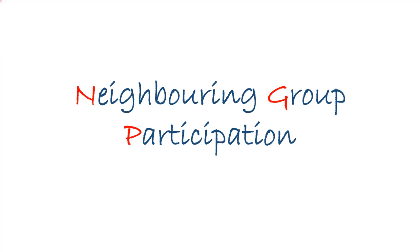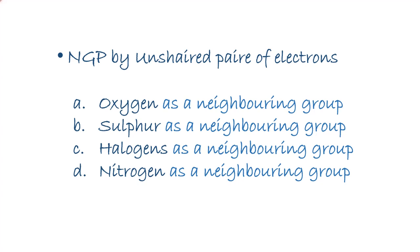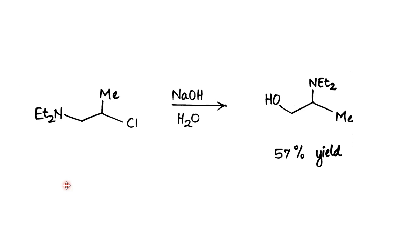Hello friends. In this lecture we are going to discuss about neighboring group participation, and this is our third lecture of NGP. In the last two lectures we have already discussed some basic points of NGP. In this lecture we are going to discuss about nitrogen acting as a neighboring group. In the last lecture we discussed oxygen, sulfur, and halogens acting as neighboring groups.